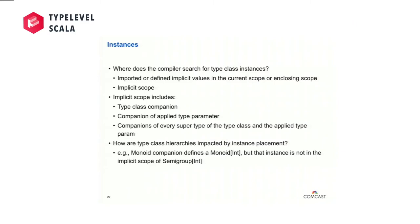My third area is providing instances. In order to talk about where we should put instances of type classes, we have to know where the compiler looks for instances — we're going to use implicit resolution. The compiler looks in two prioritized places: first in lexical scope and enclosing lexical scopes for implicit vals or defs that are defined or imported in that scope. If it doesn't find what it's looking for there, the compiler will go search implicit scope.